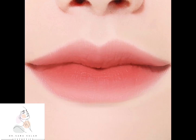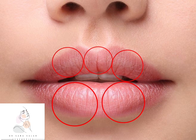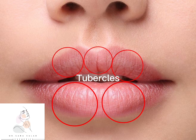The tubercles in the upper lip vary in size. In some patients, the central one is larger and the lateral ones are smaller. In other patients, the two just lateral to the midline of the upper lip are larger than the central one. The upper three and lower two pumps are called tubercles.